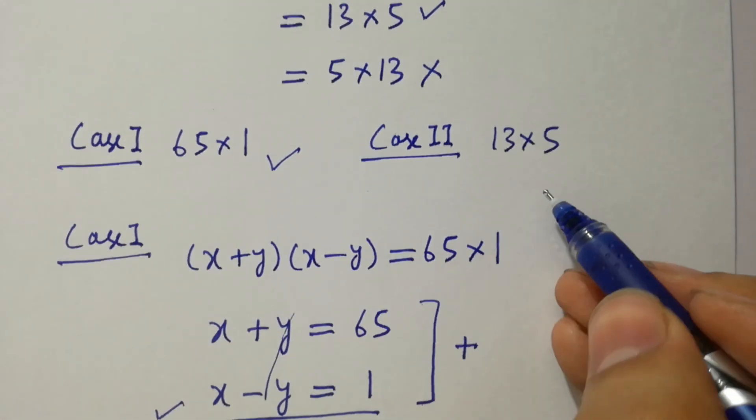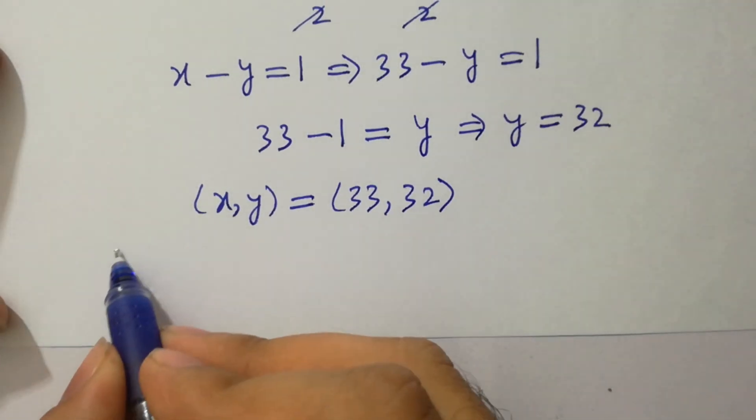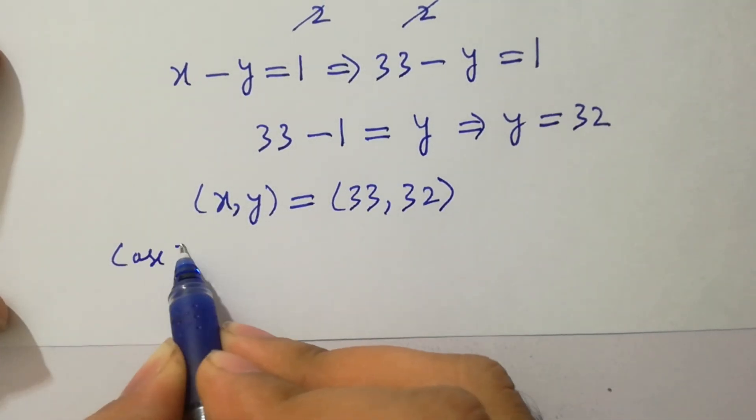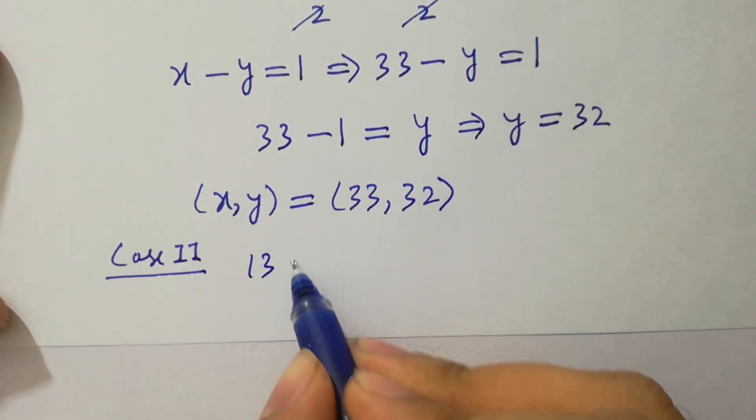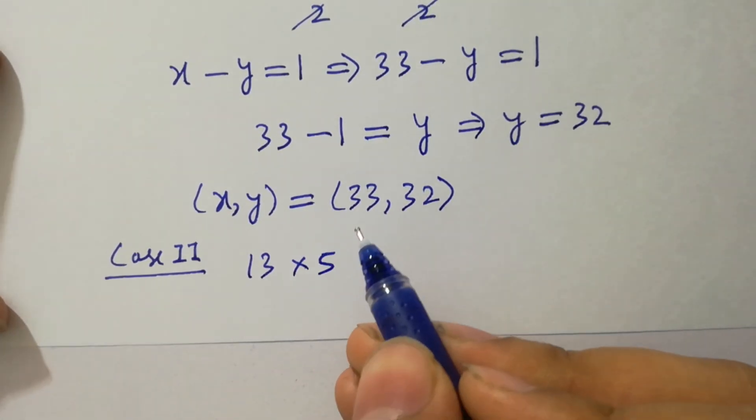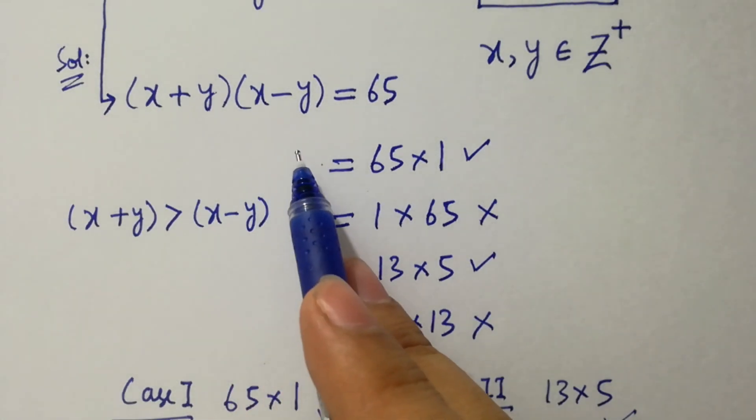Now take second case 13 times 5. Second case is 13 times 5. We have the equation here. x plus y, x minus y.